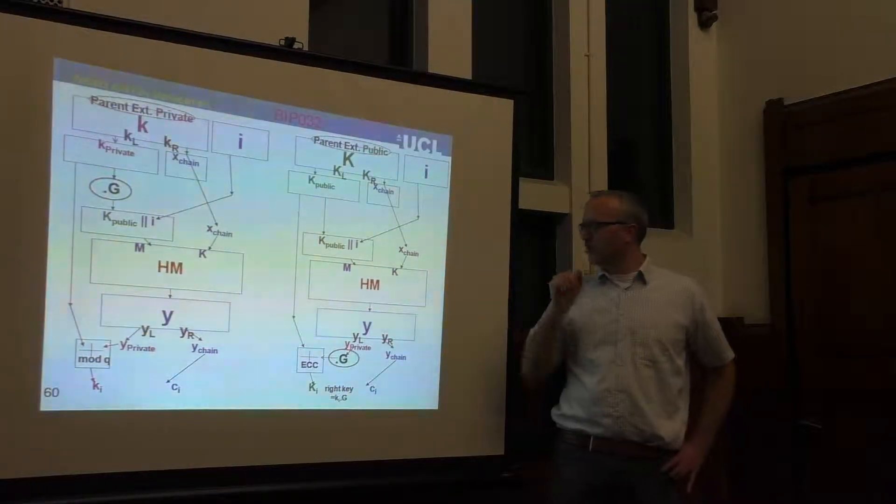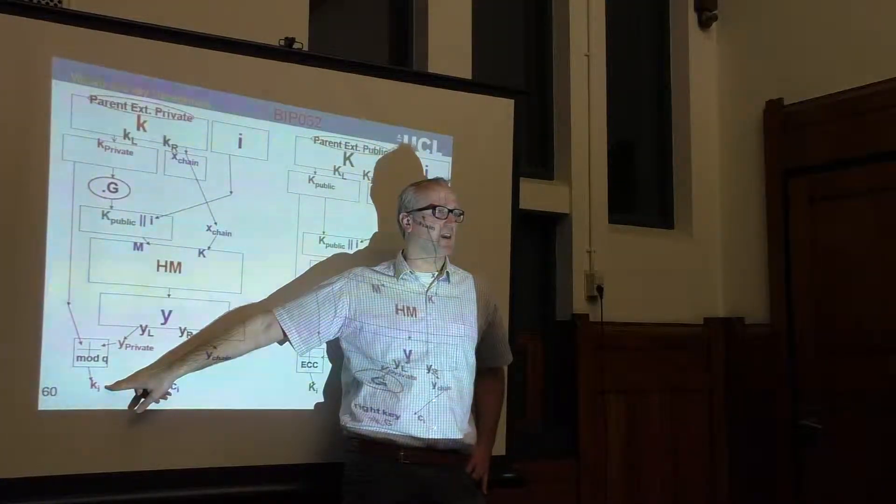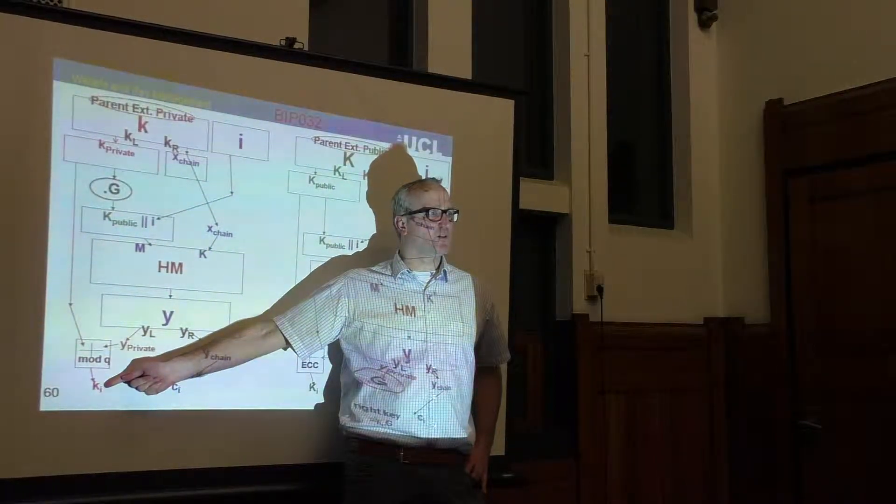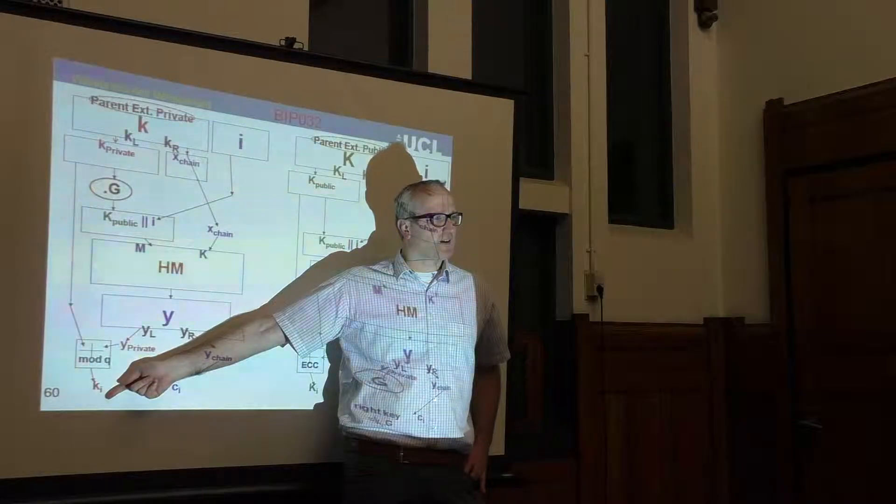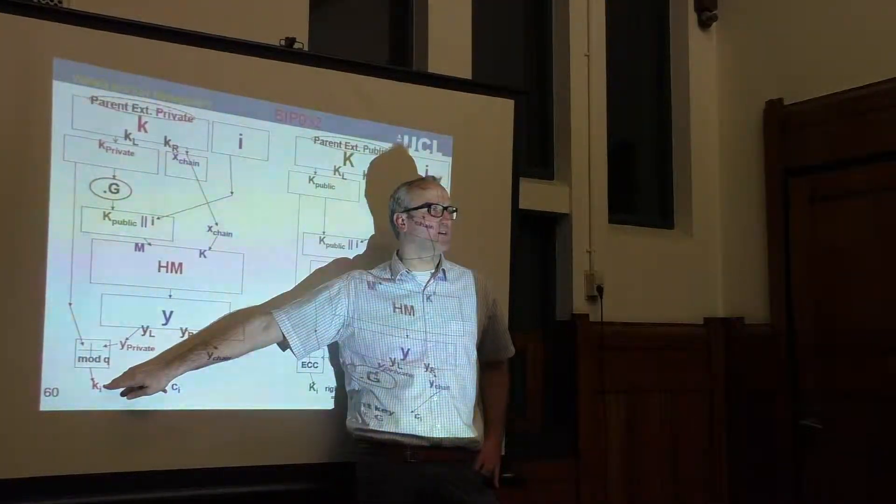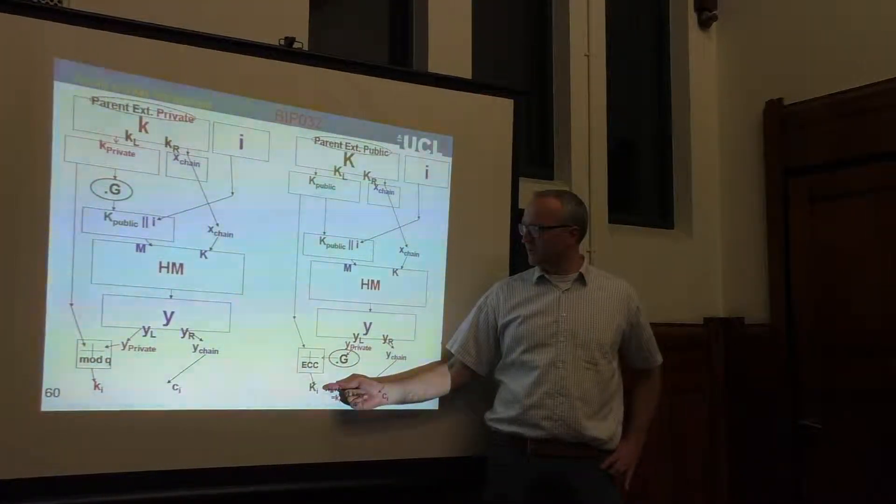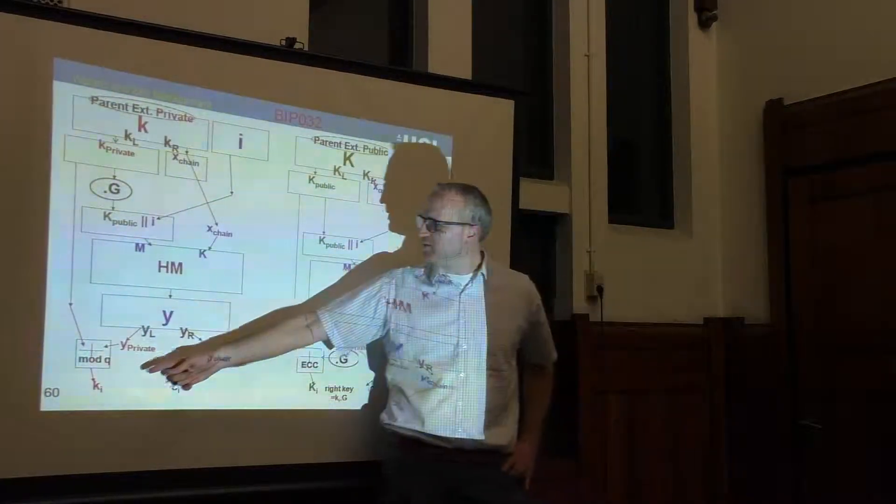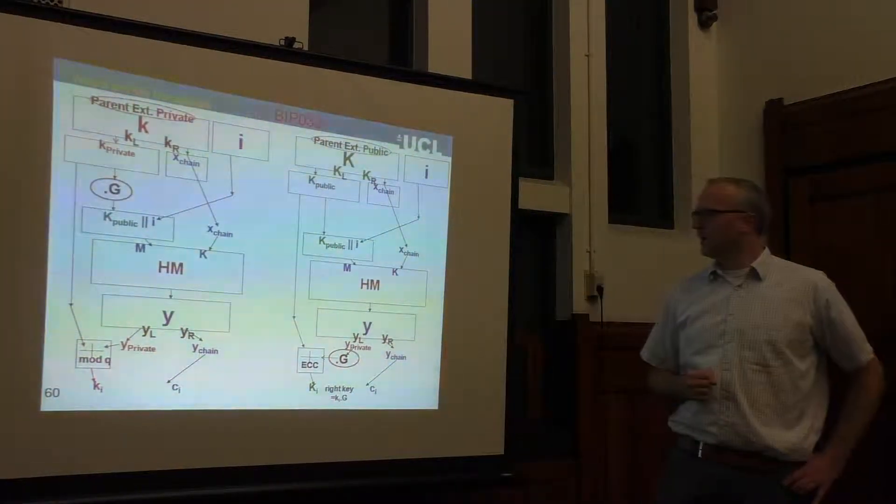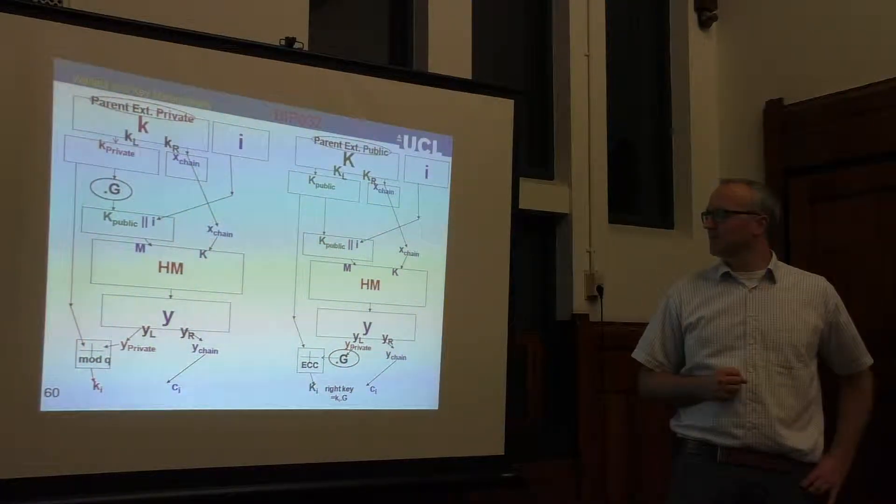Obviously, there's no way we can ever compute this quantity, Ki. That's not possible. But what is possible is to compute the corresponding public quantity, which is exactly equal to this multiplied by the base point on the elliptic curve, which I call Ki in green, which is the public part, and the thing in red is the secret part.